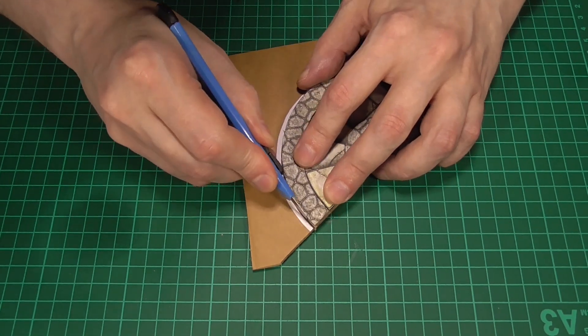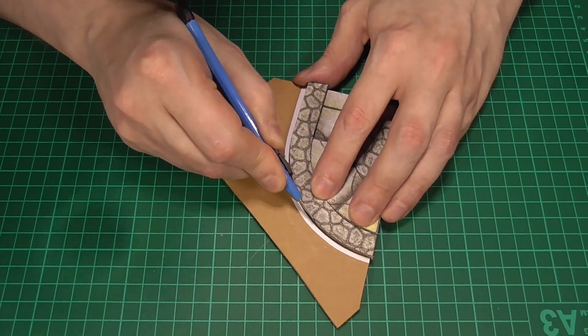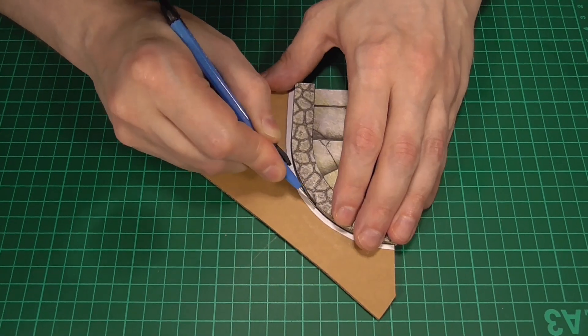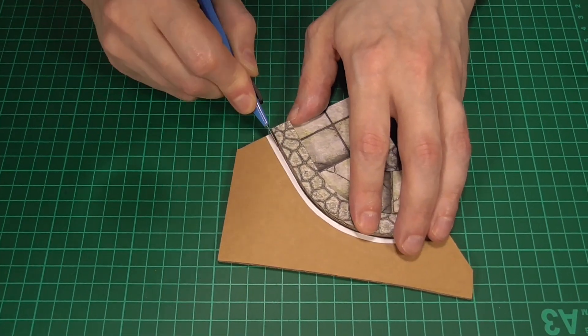Anyway, once they've all been glued down properly and had plenty of time to dry, we can cut away the rest of the floor tile by using the back edge of the wall as a guide. And I suppose I should probably add that whenever you are using a sharp knife, please do try to be careful.